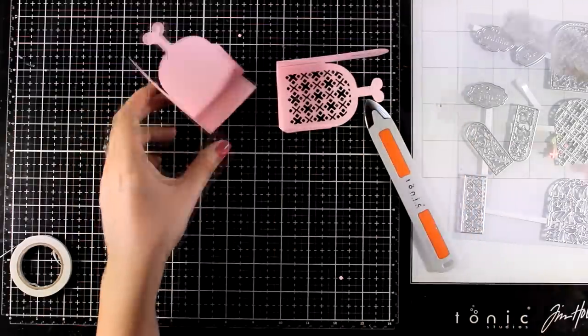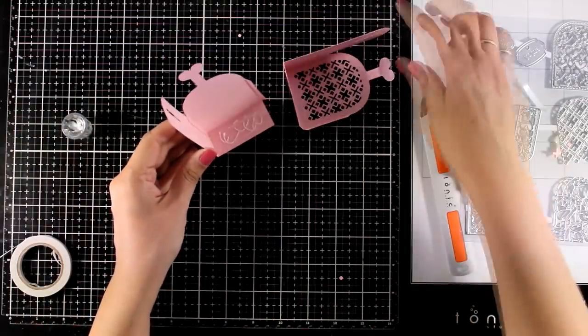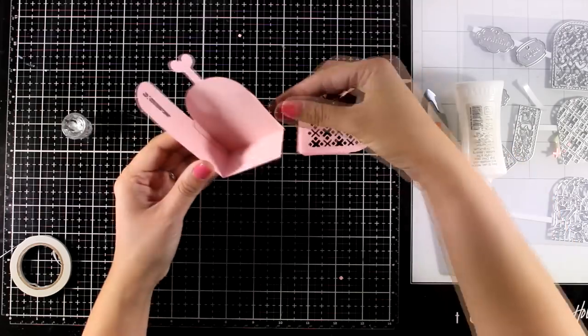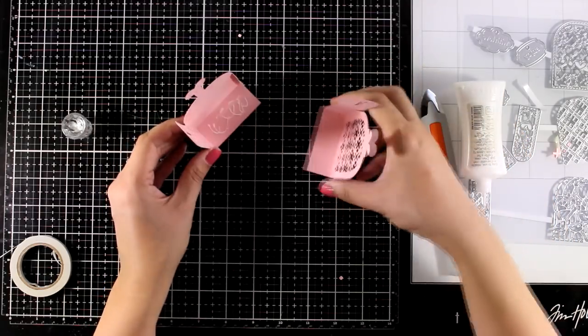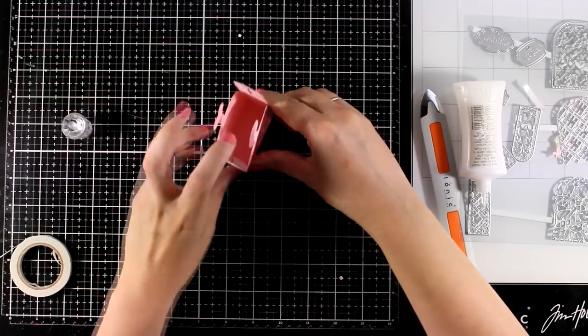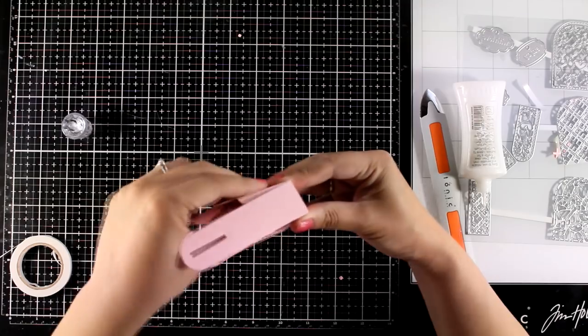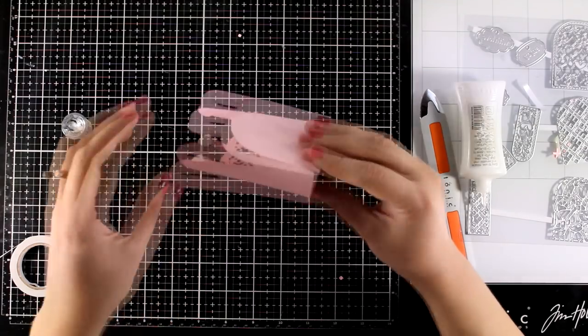I always like to run my bone folder along those areas where the glue is just to reinforce the bonding a little bit better and at the bottom if you want you can add a little bit of glue and then slide one box on top of the other. We already have glue at the side flap so all you have to do is to align them, press them together and your little box is pretty much ready.